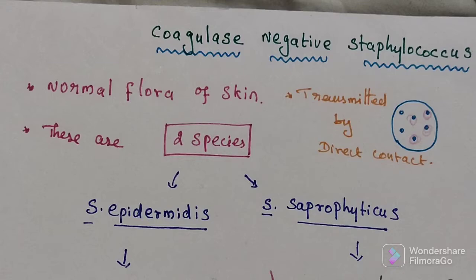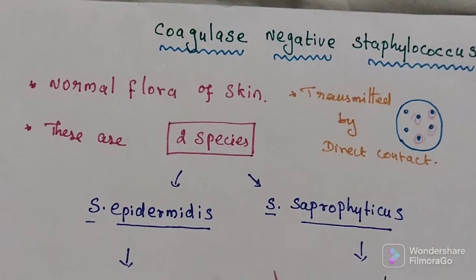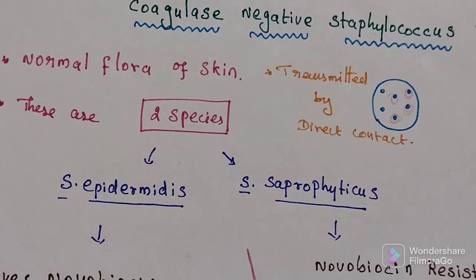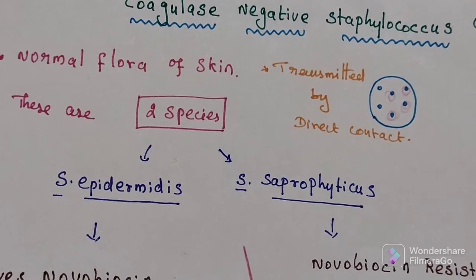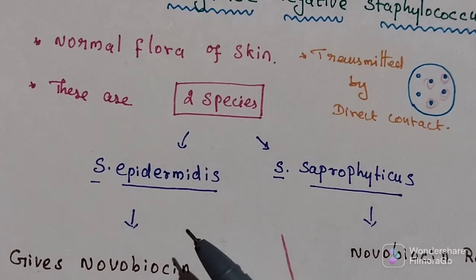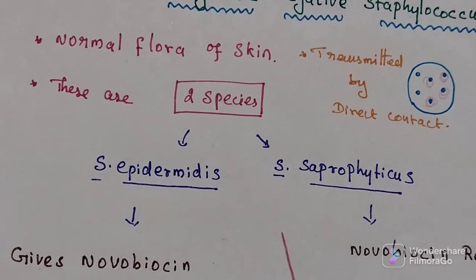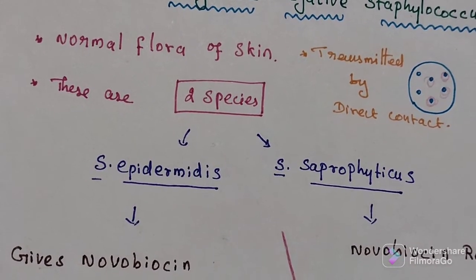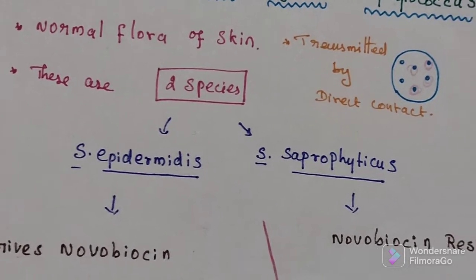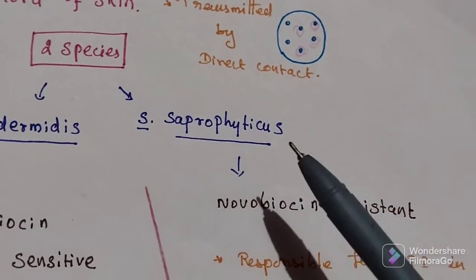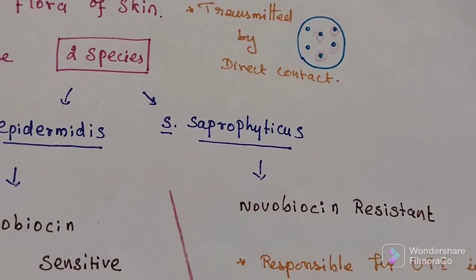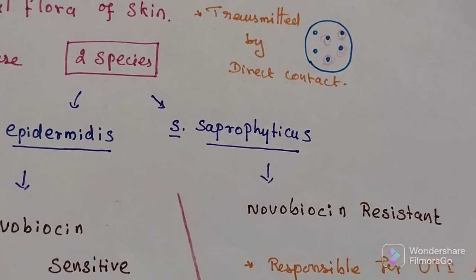There are two species: Staphylococcus epidermidis and Staphylococcus saprophyticus. Staphylococcus epidermidis gives a novobiocin-sensitive result, while Staphylococcus saprophyticus is novobiocin-resistant.